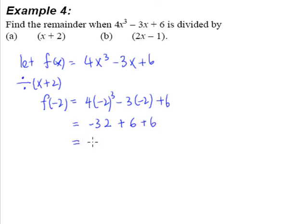So using a calculator, or mentally, I suppose you should be able to work this out very easily, -20. So what this tells us is that the remainder when f(x) is divided by x + 2 is -20. So this is part A of the question.